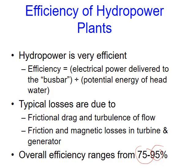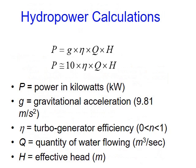The efficiency here is 95%. Power is calculated using the formula: P = ρ × g × η × Q × H, where g is gravity approximated as 9.81 (or 10), η is the efficiency of the turbo-generator, H is the head, and Q is the water flow rate.